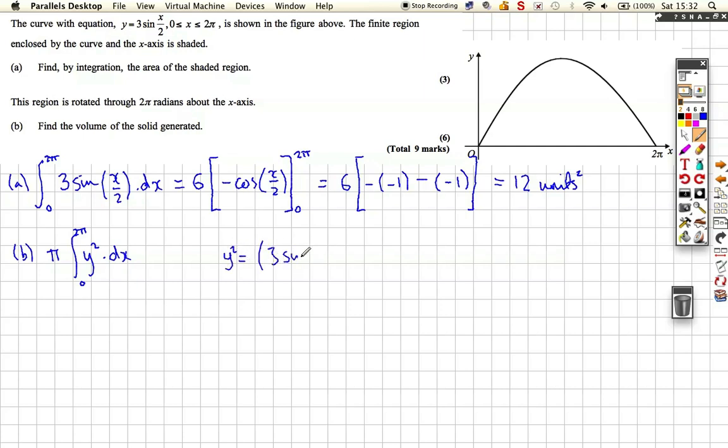So y² is [3sin(x/2)]², which comes out as 9sin²(x/2). That's actually going to be quite hard to integrate - it's a sine squared - so let's change this.